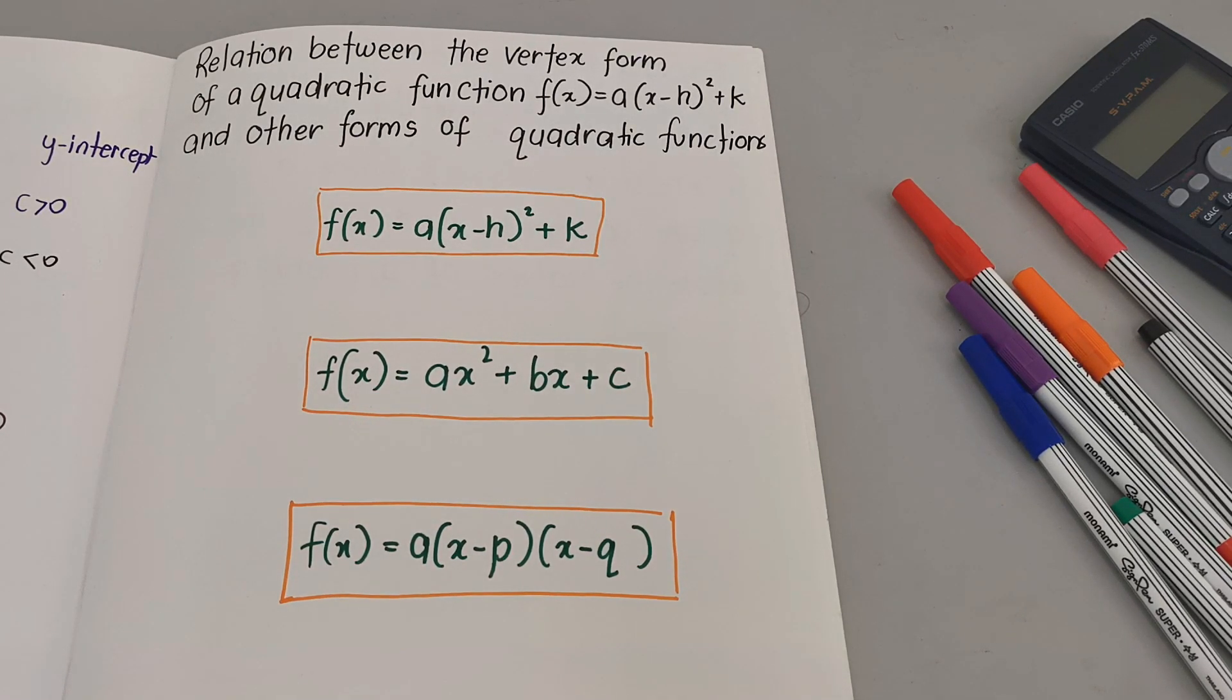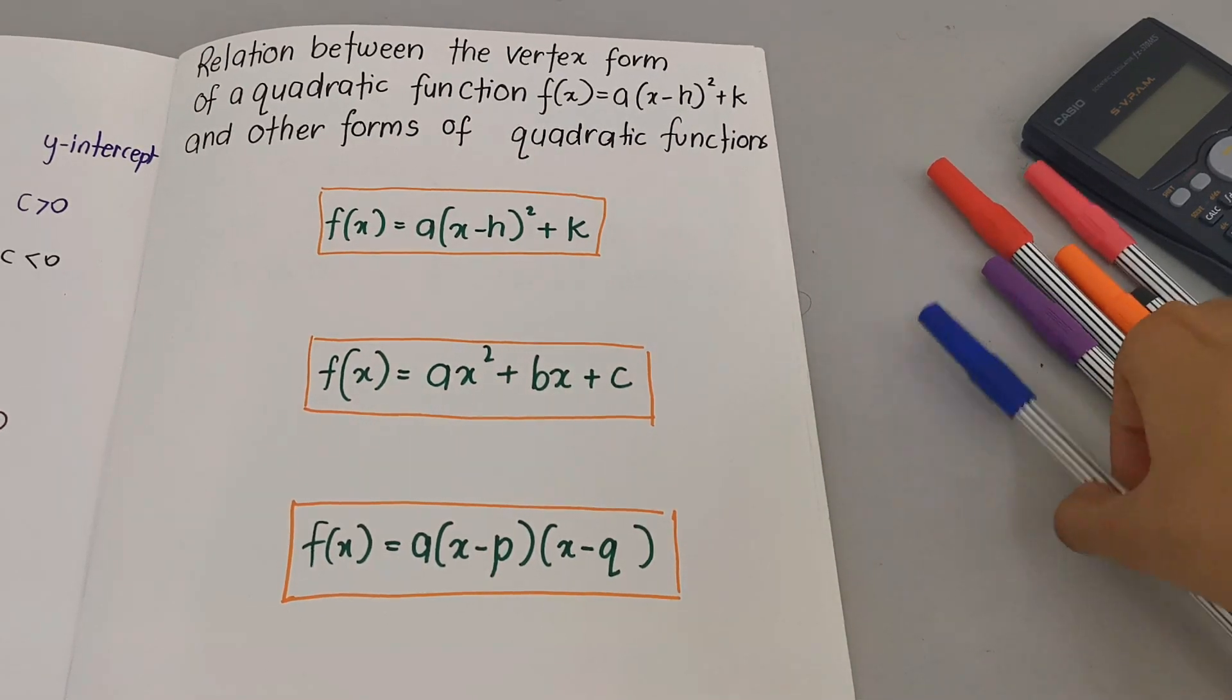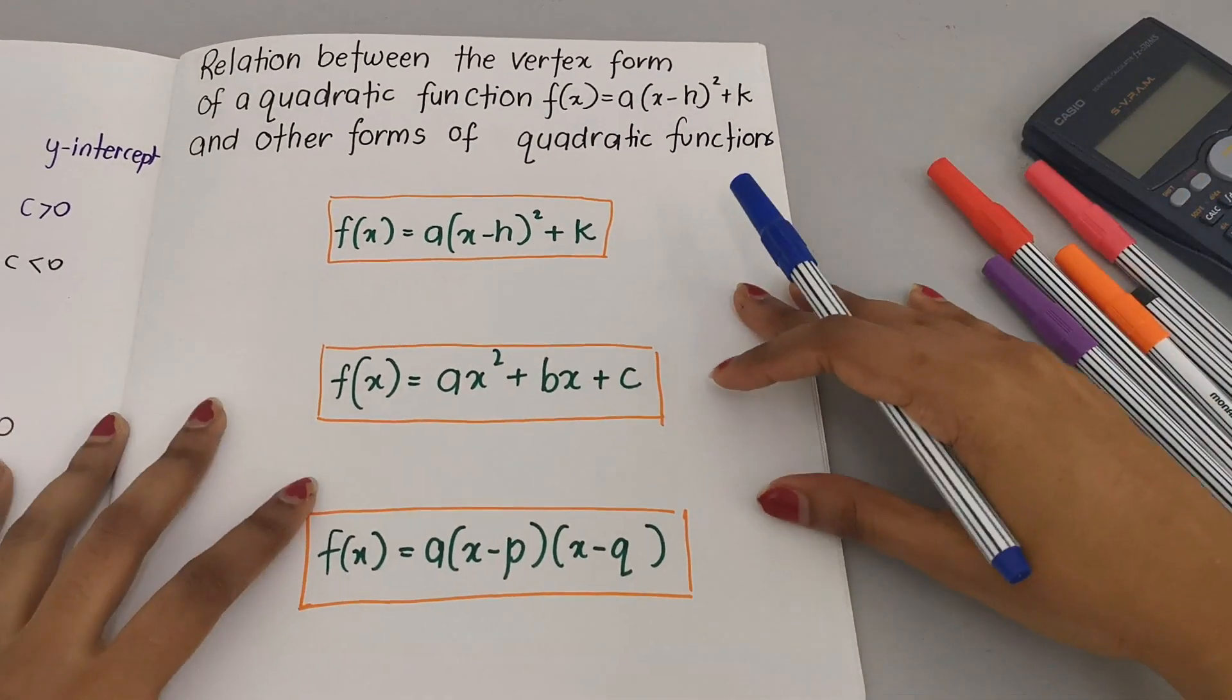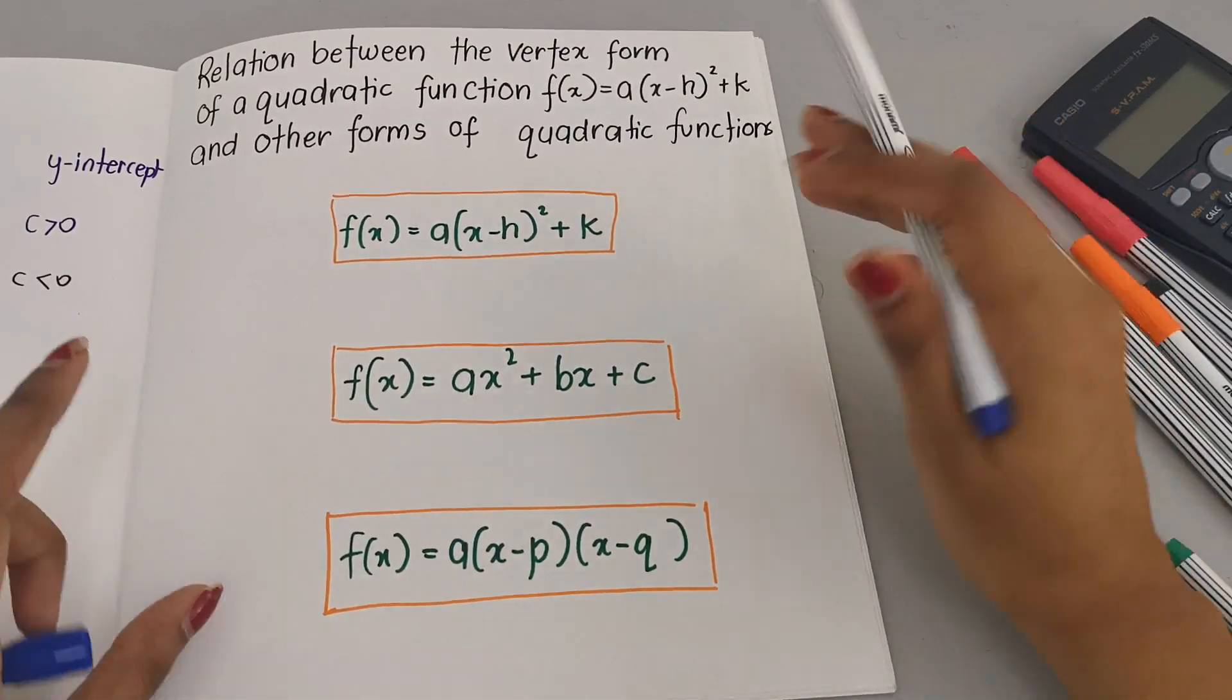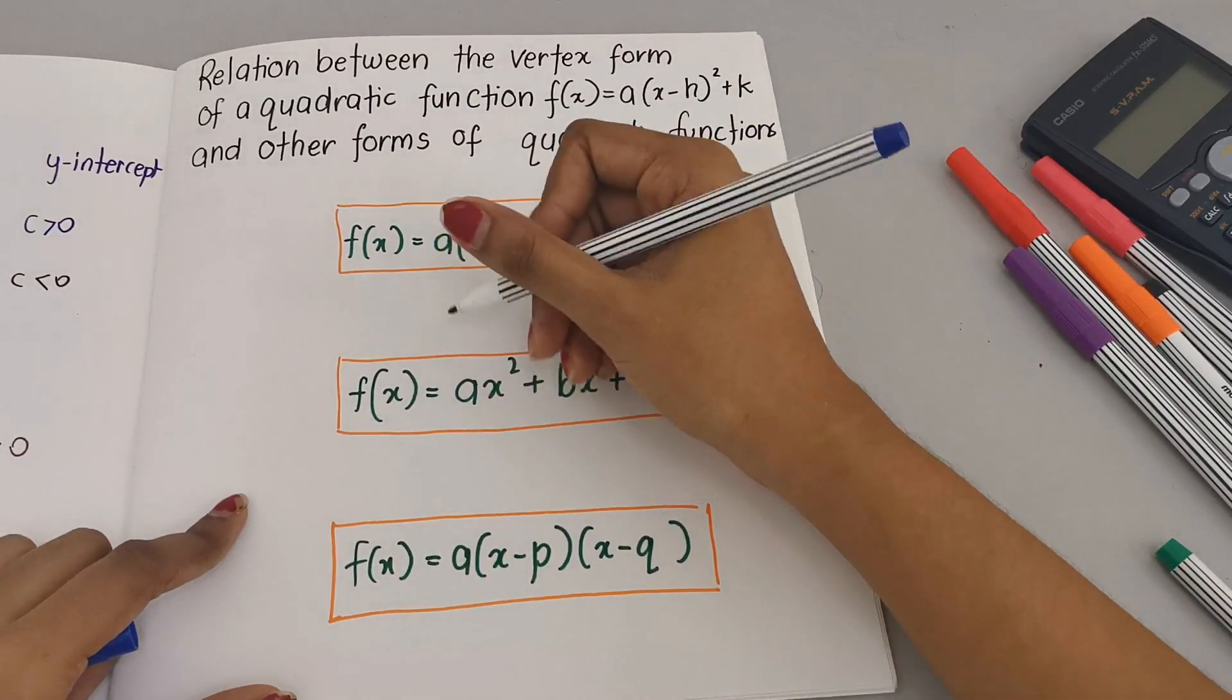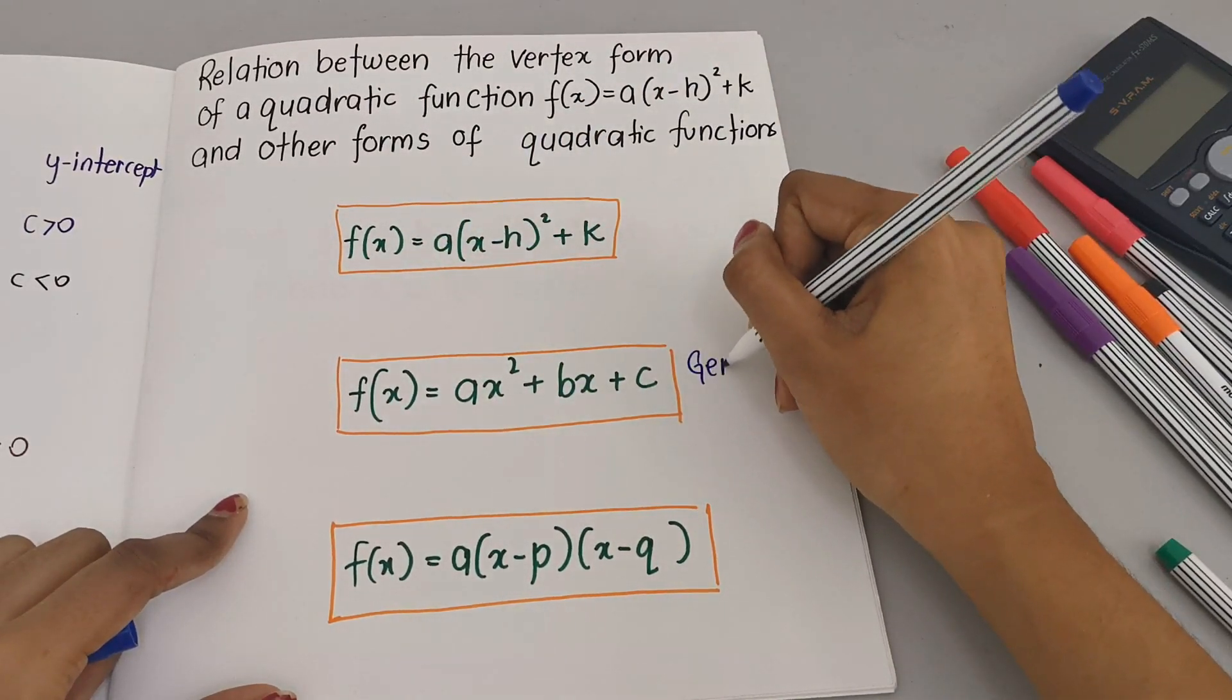We know the general form of a quadratic function. I think from here you can already guess which is the general form. So this is definitely the general form.